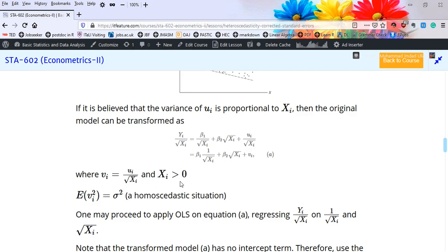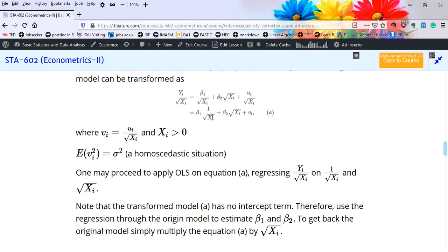The error term will change to u_i over square root of X_i, provided that X_i is greater than zero. The variance of this transformed model will be equal to sigma squared. The expected value of v_i squared is equal to sigma squared, a homoscedastic situation, where v is equal to u_i over square root of X_i, provided that X_i is greater than zero.